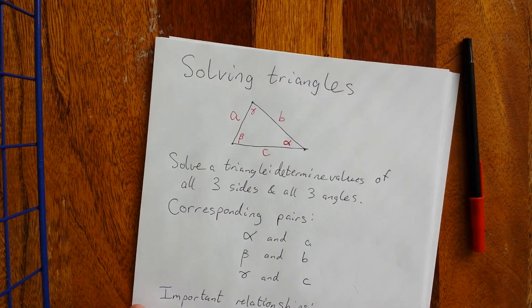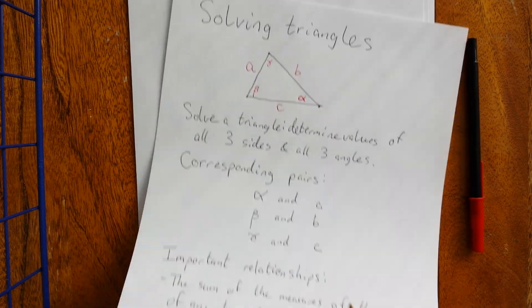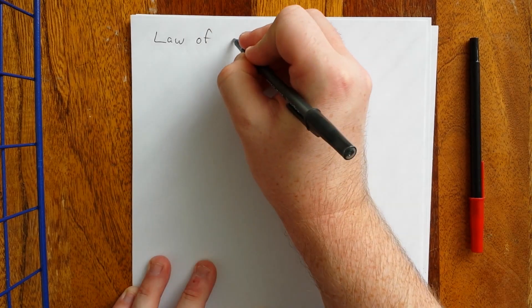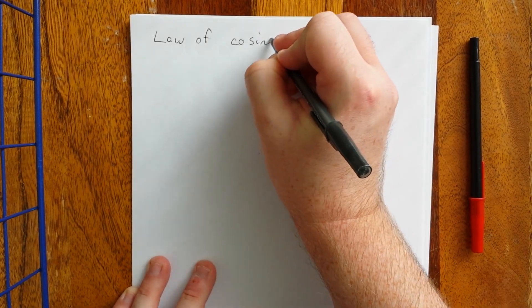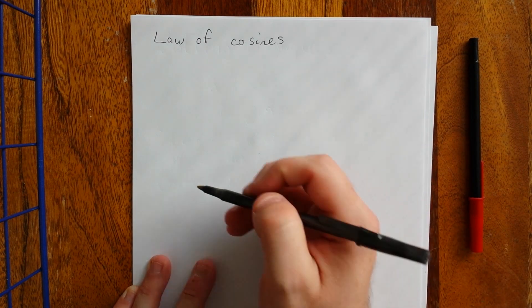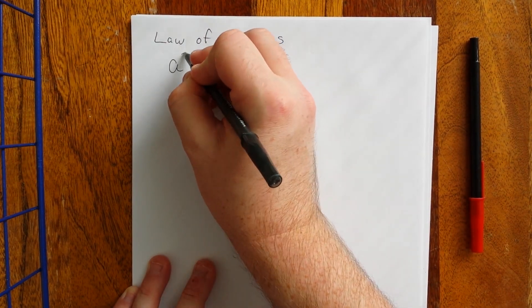The last of our three relationships, let's get on over to the next page. The last of our important relationships is referred to as the law of cosines. Now the law of cosines, just like the law of sines, had three different statements in it. The law of cosines has three different statements as well.